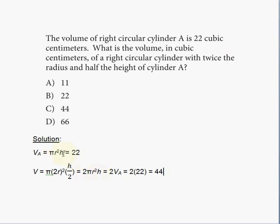And we know that πr²h is the volume of cylinder A in the formula. Right? So 2 times πr²h is 2 times the volume of cylinder A. And the volume of cylinder A is given as 22. So 2 multiplies the 22.